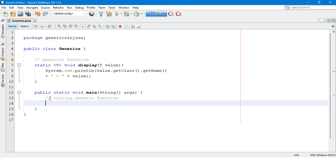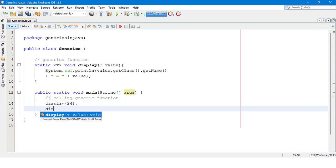We call this function this way and we pass the argument to this function - 24. After that we call again this function. This time I pass the string to this function.